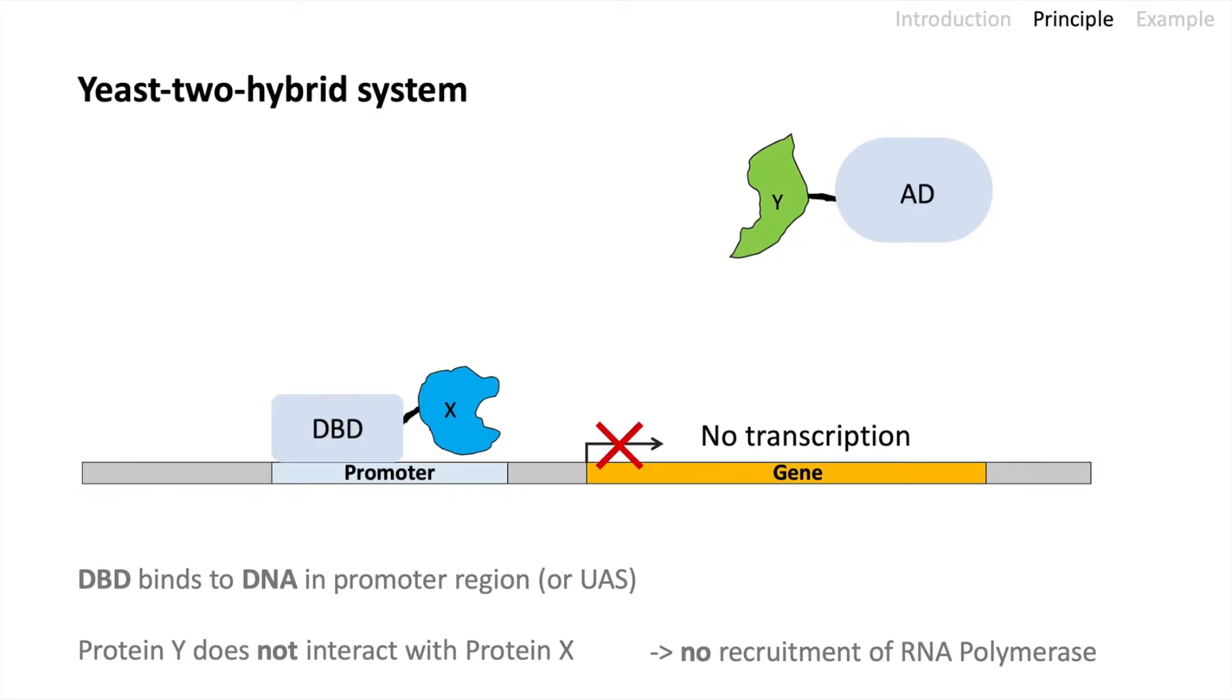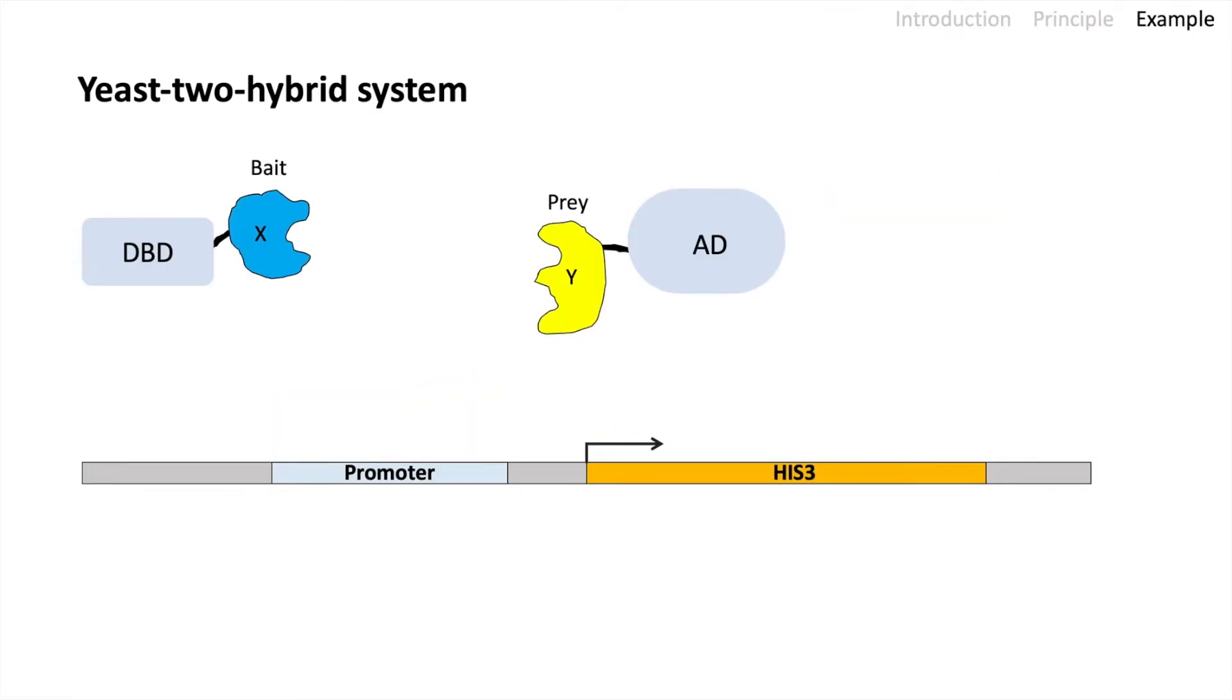This is the yeast-two-hybrid system and I prepared one example how it is done in the lab. Here we have a gene sequence of the HIS3 gene and HIS3 is required for histidine biosynthesis. That means without the gene, cells will not grow on histidine depleted media. HIS3 in this case is our reporter gene.